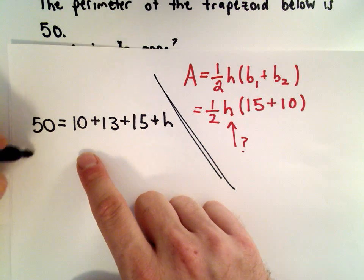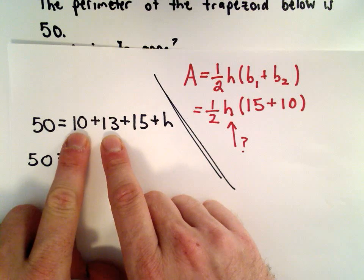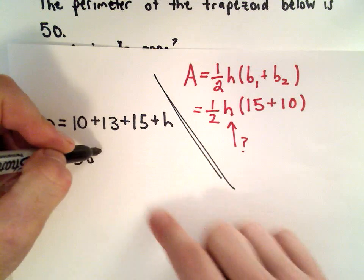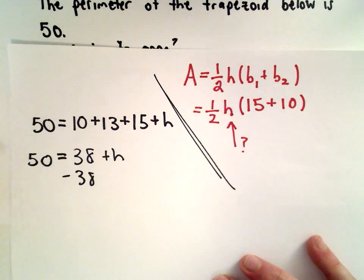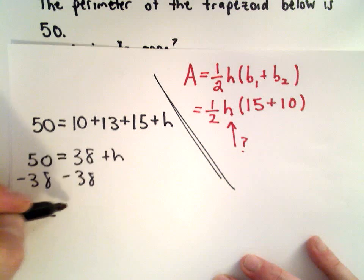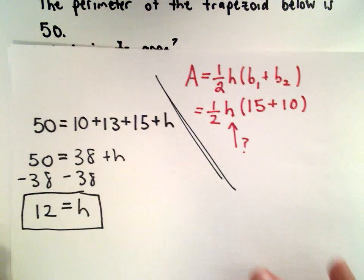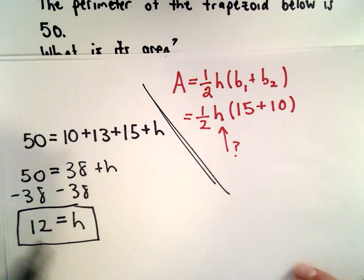So 10 plus 13, that's 23. 23 plus 15, that's 38. And now I can subtract 38 from both sides. 50 minus 38 is going to give us 12. So that's going to be the height of our trapezoid.